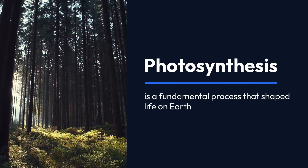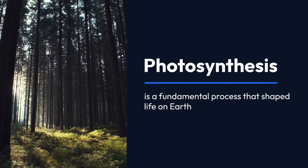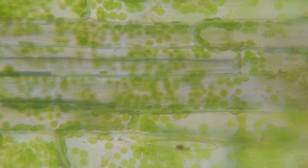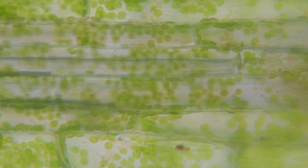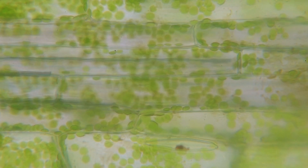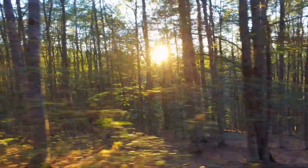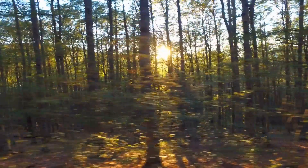Photosynthesis is a fundamental process that shaped life on Earth. This biochemical process, used by plants, algae, and some bacteria, converts sunlight into chemical energy, producing oxygen in the process.